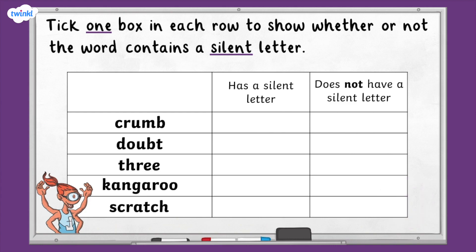Great work. Let's take a look at the answers. The words are crumb, doubt, three, kangaroo, and scratch. Three of these words contain a silent letter. They are crumb, doubt, and scratch. Well done if you correctly spotted these three words that contain silent letters.